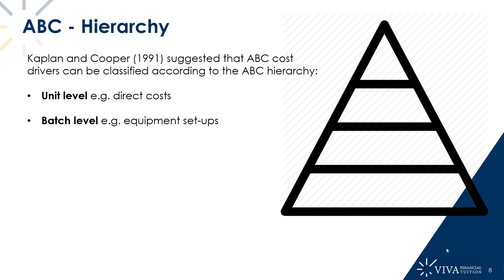Next, we have batch level activities. The appropriate cost driver for batch level activities is the number of batches produced — we consume more resources every time we produce a batch of products. Typical examples include supplier ordering costs, because every time we produce a batch we place an order with our suppliers, and equipment setup costs, where machinery is prepared for each new batch.